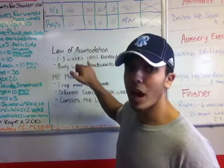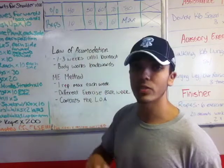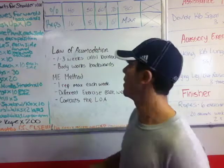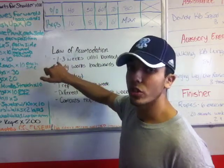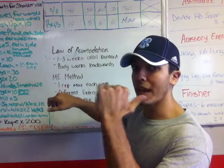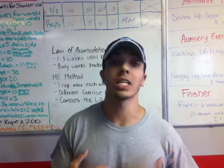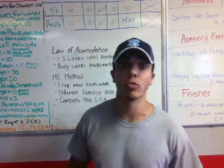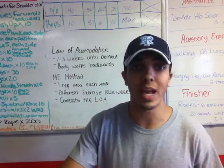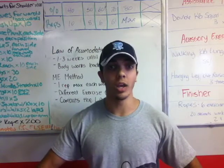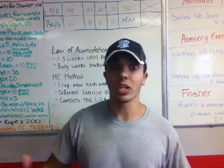The law of accommodation is a biological law — this is a hundred percent true, it's in textbooks — that if your body is using the same stimulus over and over again, your body is going to start to work backwards. The human body is designed to constantly adapt to its environment. So if you're always doing the same thing, after a while your body needs a week of rest so it can forget what it's done and then get back to it again, and then all of a sudden it's like a new stimulus.